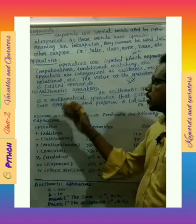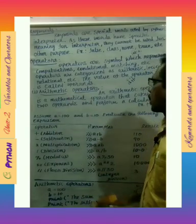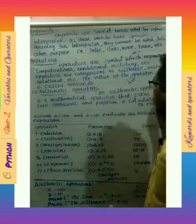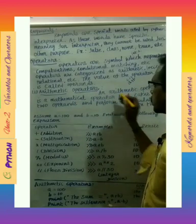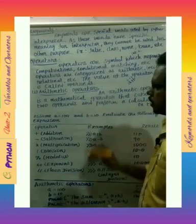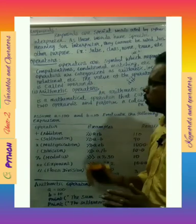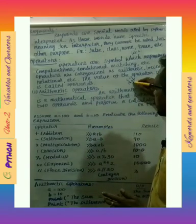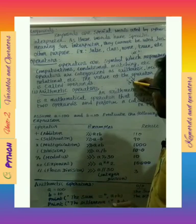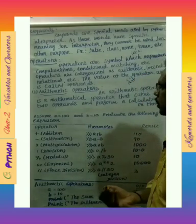The first operator is the arithmetic operator. An arithmetic operator is a mathematical operator that takes two operands. For example, 'a plus b' — the plus is the arithmetic operator, a is one operand and b is the other operand.